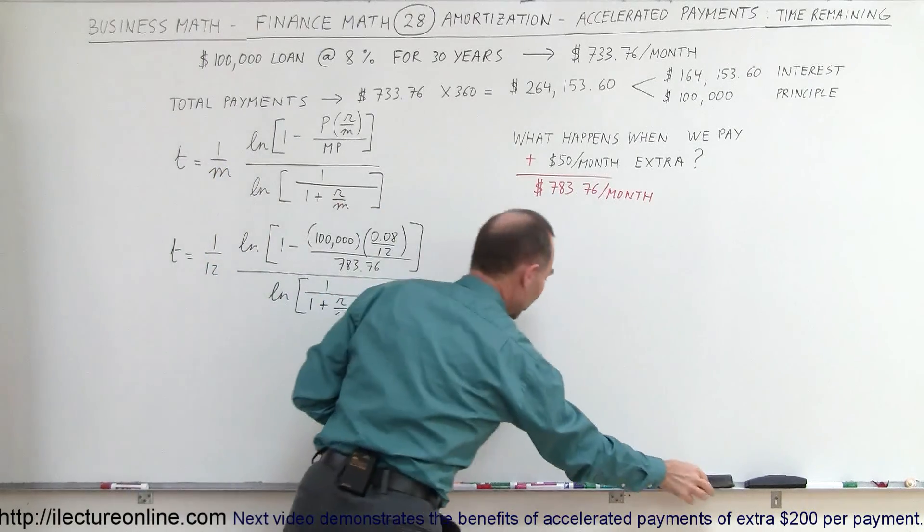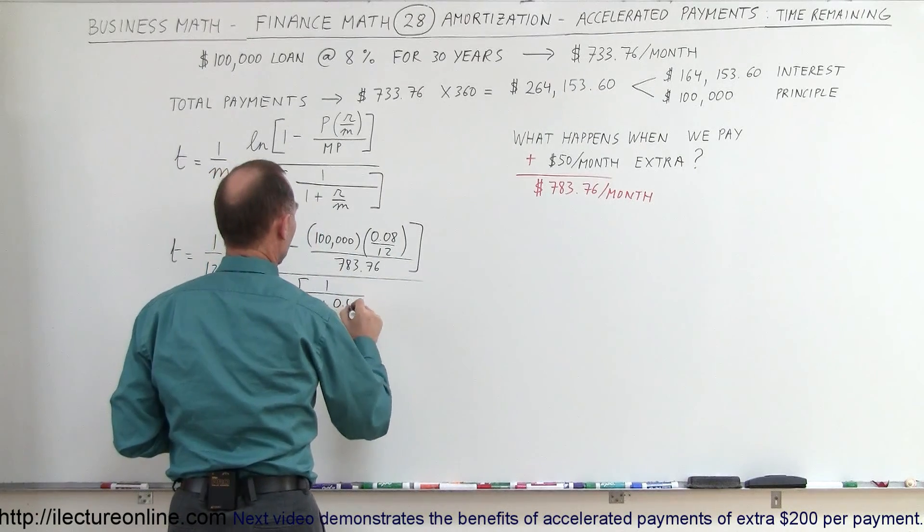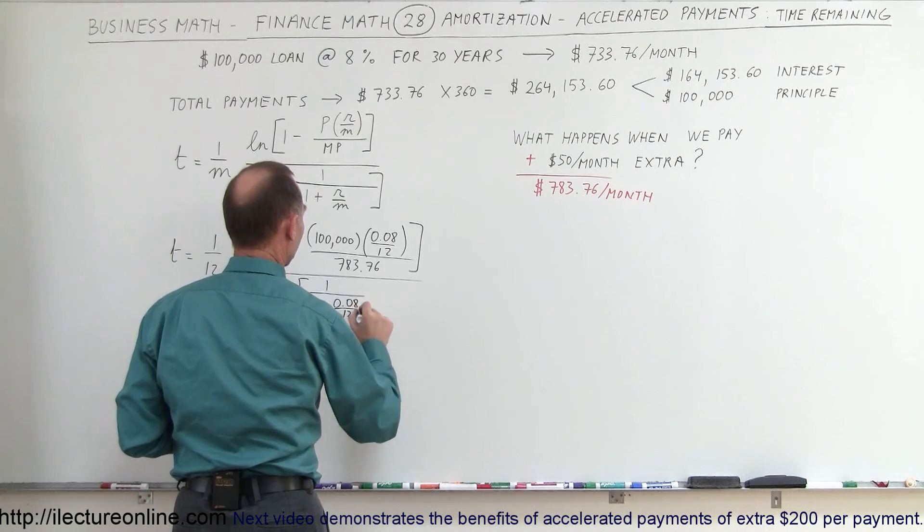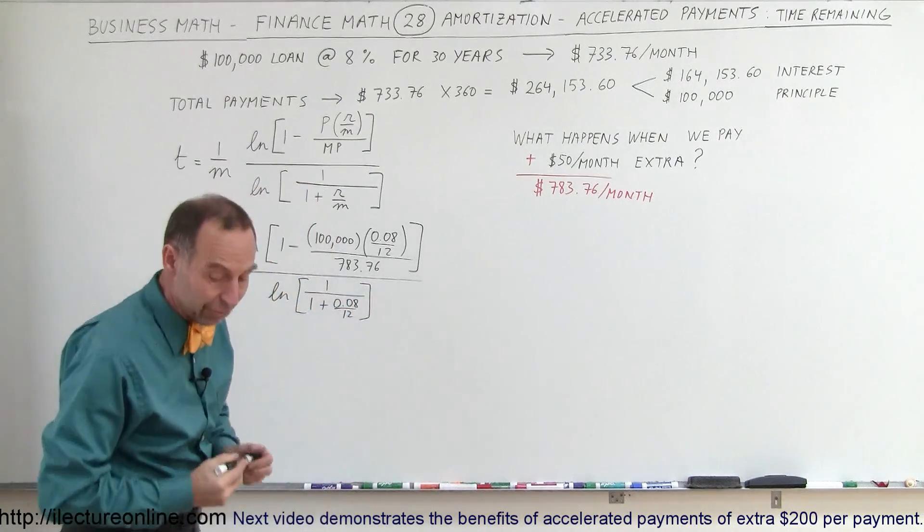I might as well plug the numbers in, right? So that would be the rate, 0.08 divided by 12. All right, so let's go ahead and do that.